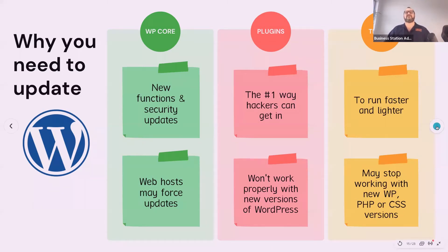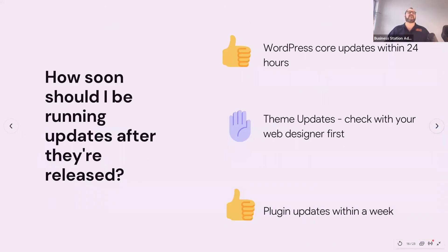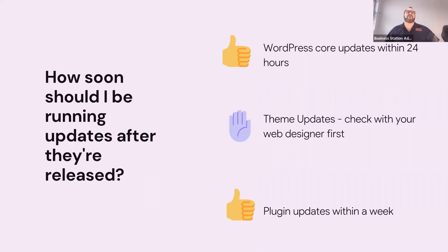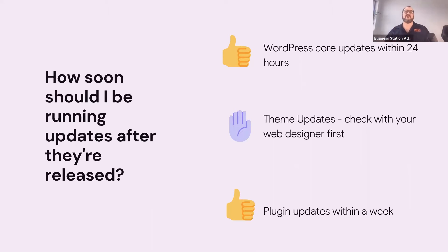If this seems scary, a lot of this stuff can happen quite easily in the backend. How soon should you run updates after they're released? For WordPress core updates, I'd recommend doing them within 24 hours. For theme updates, check with your website designer first in case they've done something custom in the backend — but if everything looks okay, within 24 to 48 hours is fine.